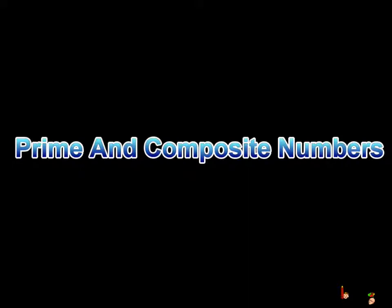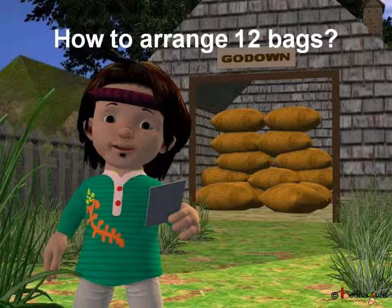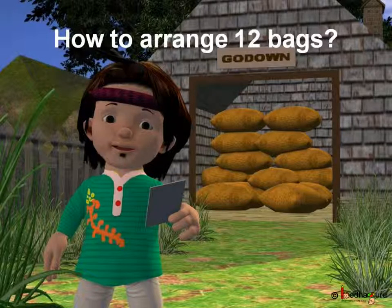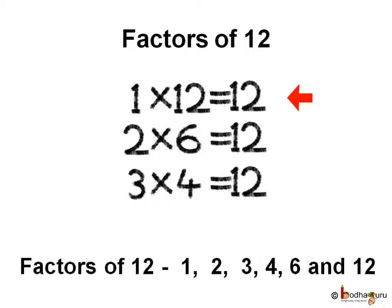In our last class we understood about factors. Let us take an example to refresh our memories. So let us find the factors of 12. 1 times 12 is 12. 2 times 6 is 12. 3 times 4 is 12. So factors of 12 are 1, 2, 3, 4, 6 and 12.